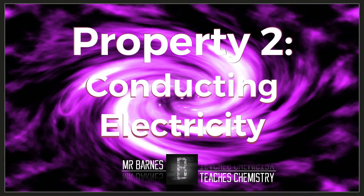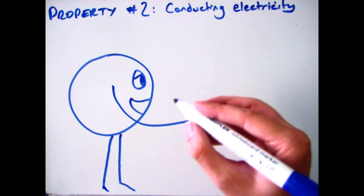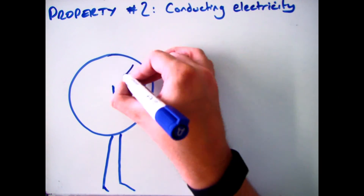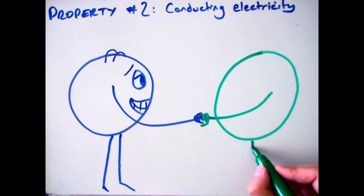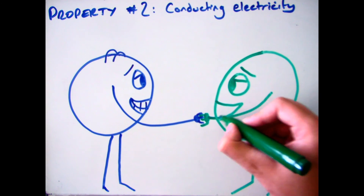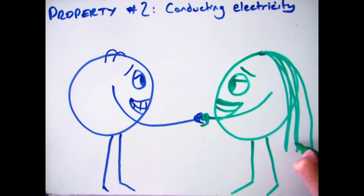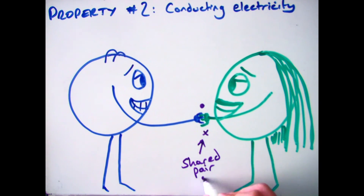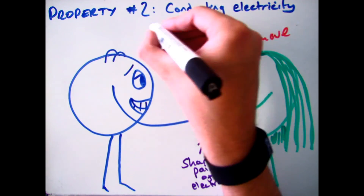Let's move on to whether simple covalent compounds conduct electricity or not. The key thing when describing this property is to go back to the nature of a covalent bond, which is a shared pair of electrons. Because in covalent compounds all of those electrons are shared, they are not free to move. So we say it does not conduct electricity, and the reason is because the electrons are not free to move.